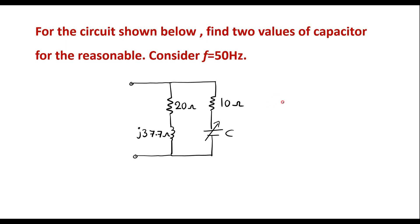In this video, I will consider one example on parallel resonant circuit. For the circuit shown below, find two values of capacitor for resonance. Consider frequency equal to 50 hertz.